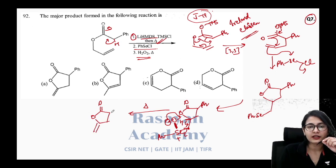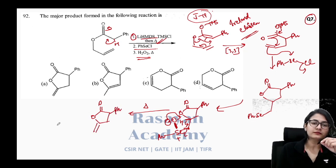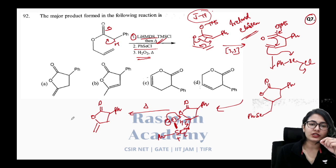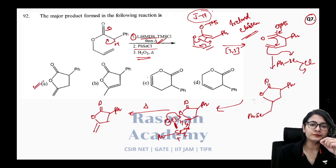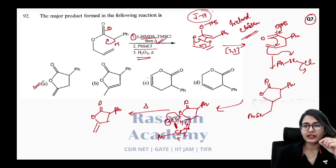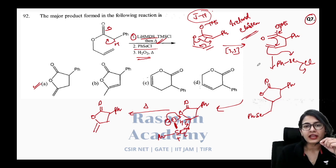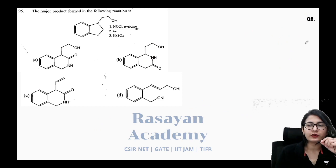Question seven is a pericyclic reaction and important name reaction. LiHMDS, a bulky base, removes a proton to give the enolate, which is trapped with TMSCl to give OTMS. On heating, a [3,3]-sigmatropic reaction occurs — the Ireland-Claisen rearrangement, giving a carboxylic acid salt. Next, PhSeCl acts as an electrophile; the ring attacks selenium to form a five-membered ring. Heteroatom oxidation with H₂O₂ gives a selenoxide, and syn-pyrolytic elimination — selenoxide elimination — gives the alkene. Answer is option A.